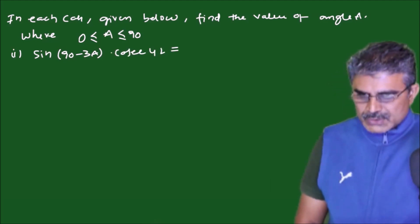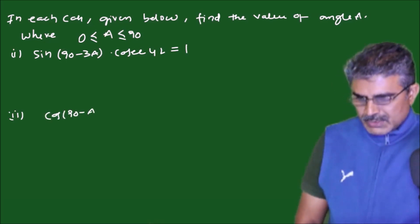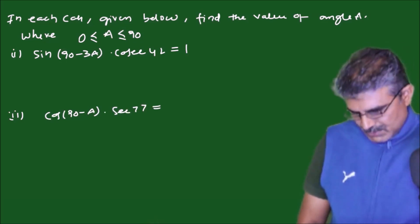And the second one is cos(90 minus A) into secant 77 is equal to 1.